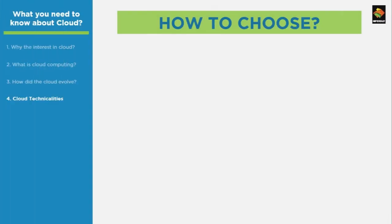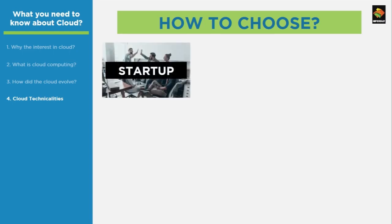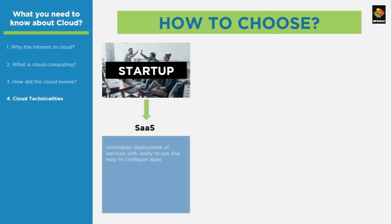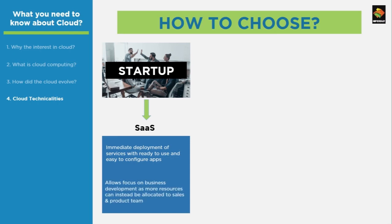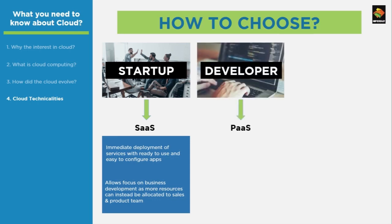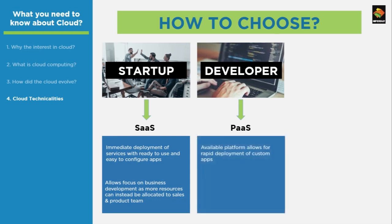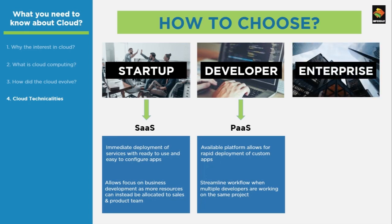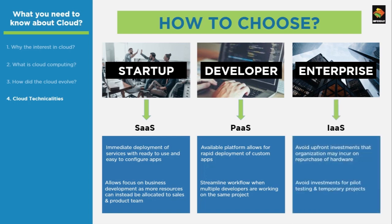Depending on your requirement, you can choose the cloud service model most suitable for your organization. Start-ups and SMEs can opt for SaaS, which helps them launch applications quickly without diverting resources for IT infrastructure management. PaaS is more suitable for developers, as it allows them to deploy applications quickly without worrying about the infrastructure. Lastly, enterprises can choose IaaS, which allows them to reduce upfront costs of infrastructure and capital investment for all their projects.